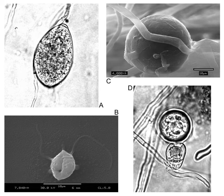Pythium damping-off is a very common problem in greenhouses, where the organism kills newly emerged seedlings. Mycoparasitic members of this group, e.g. P. oligandrum, parasitize other oomycetes and fungi and have been employed as biocontrol agents. One Pythium species, Pythium insidiosum, also causes pythiosis in mammals.